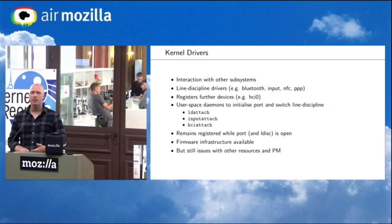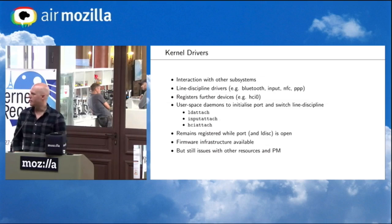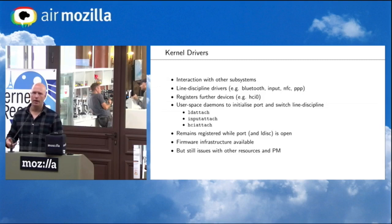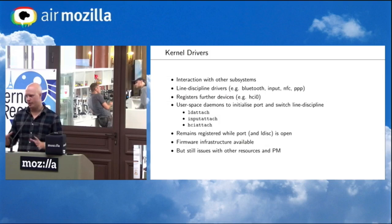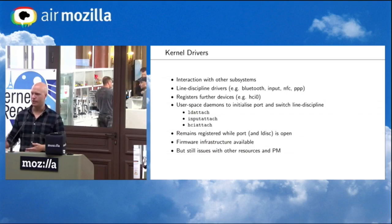Having power management implemented in user space also has its drawbacks, because you need to signal when the system is going to sleep and waking up, and so on. Firmware loading is another issue, since you cannot rely on all the infrastructure that's already available in the kernel for loading and managing firmware. But as I mentioned, user space drivers aren't enough — you may need to interact with other subsystems in the kernel. Bluetooth is one example, as are input drivers built on top of serial, NFC, and so on — these are examples of line discipline drivers, where you replace the normal line discipline with a dedicated one implemented as part of that subsystem.